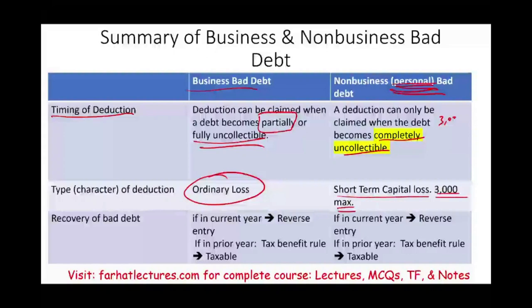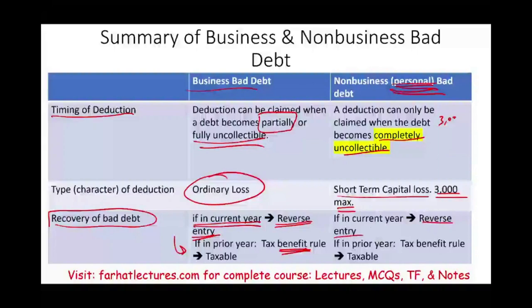What happens if you recover the money? If the recovery occurs in the same year you took the deduction, you simply reverse the entry and the issue is resolved. If the recovery occurs in a subsequent year — meaning you took the deduction in a prior year and receive the money this year — you must apply the tax benefit rule, which we covered in a prior session. That recovered amount becomes taxable income. The same applies to personal bad debt: same-year recovery reverses the entry; prior-year recovery triggers the tax benefit rule.